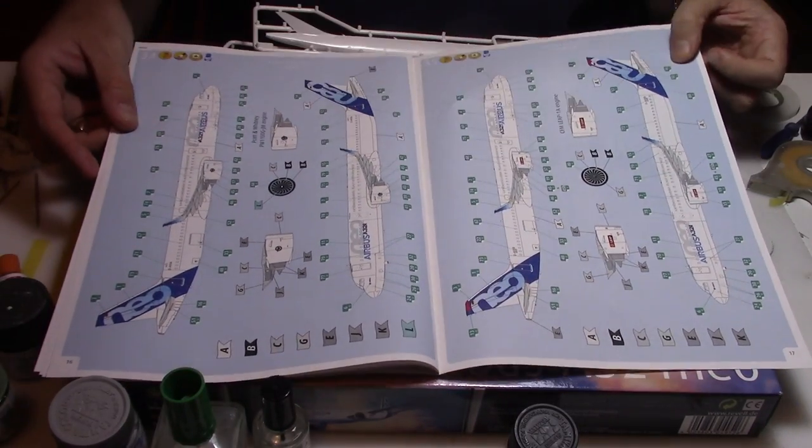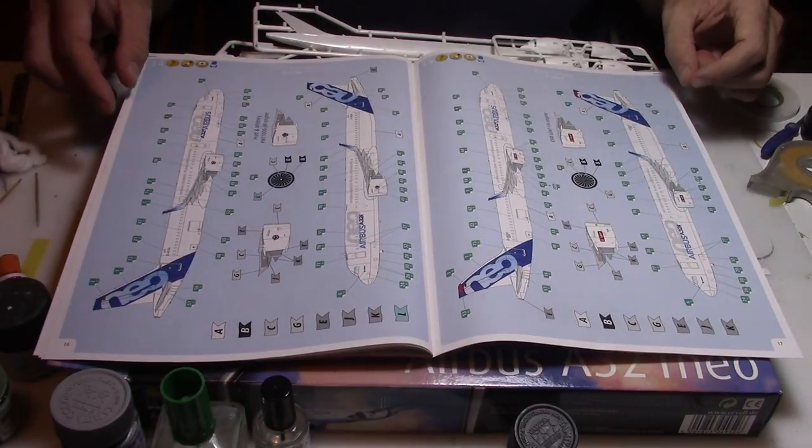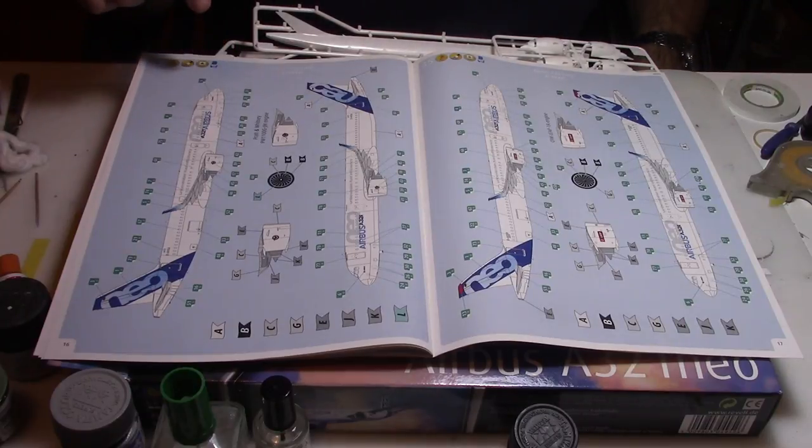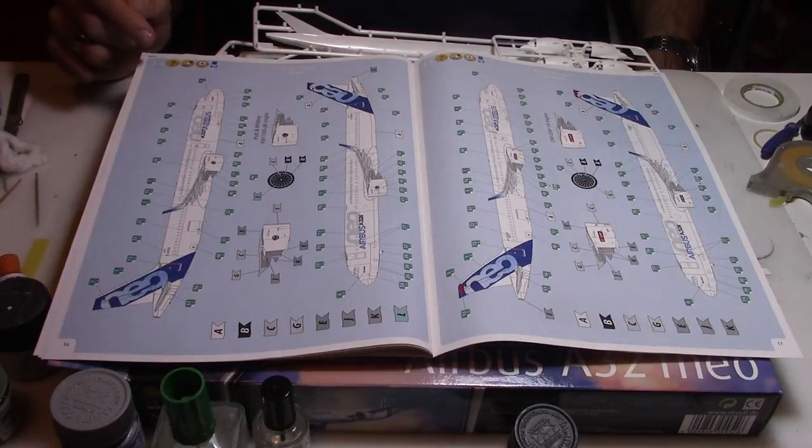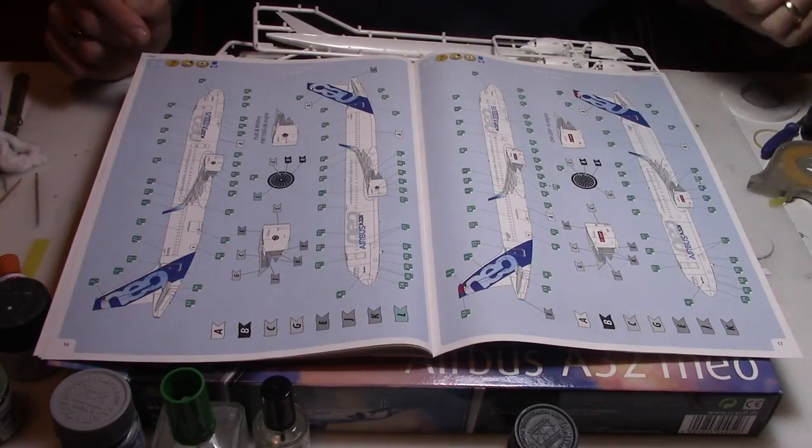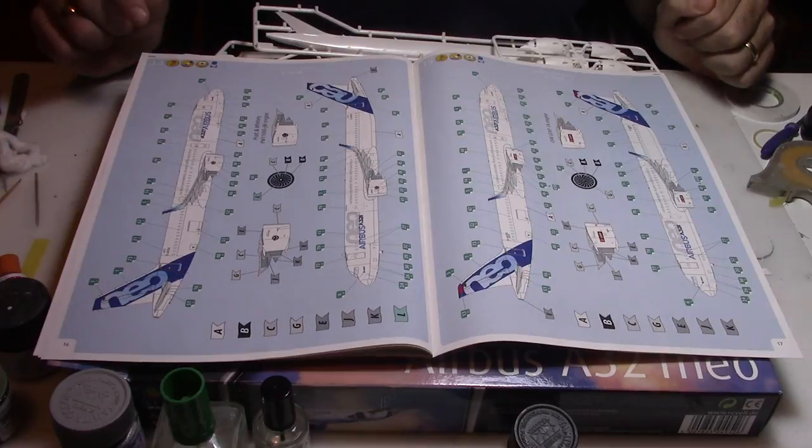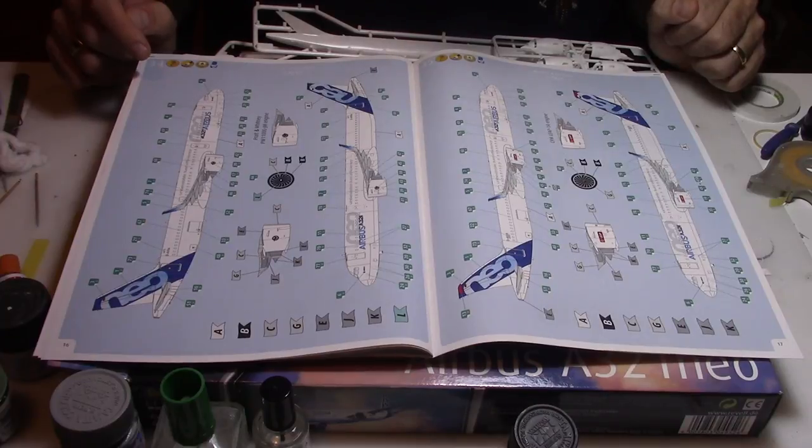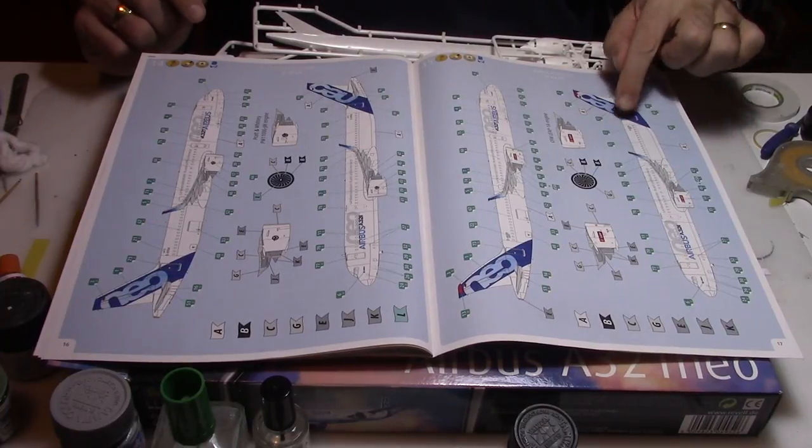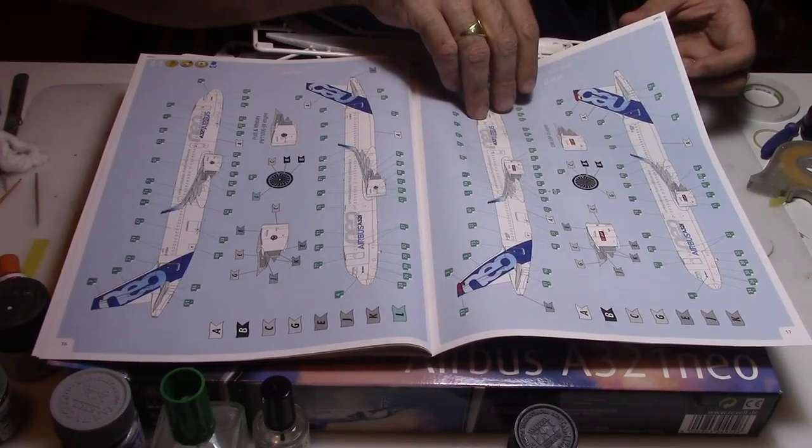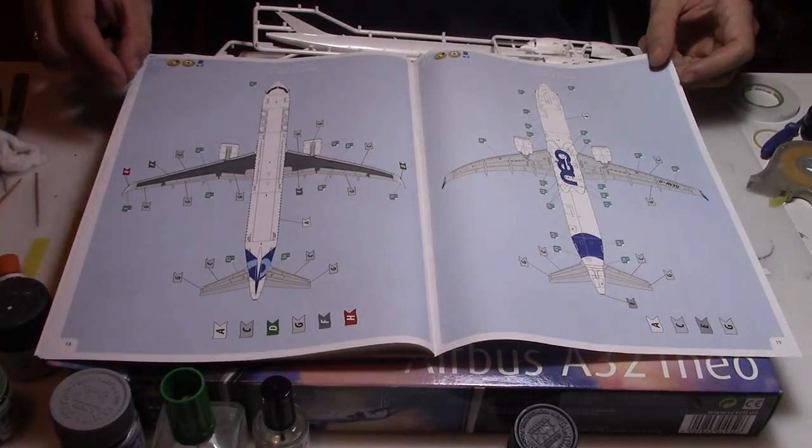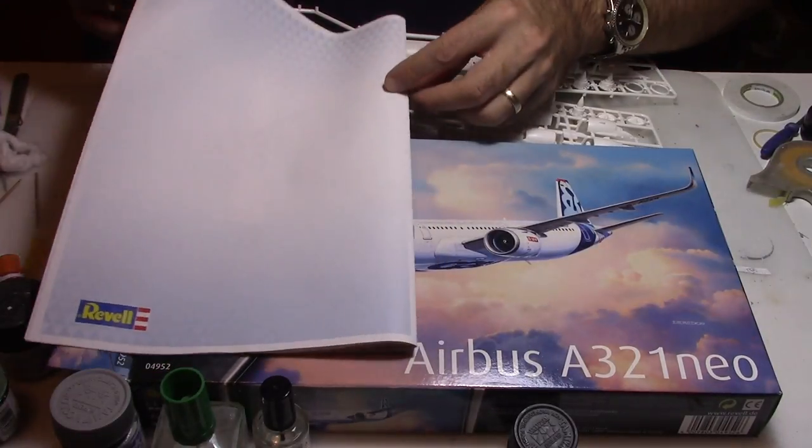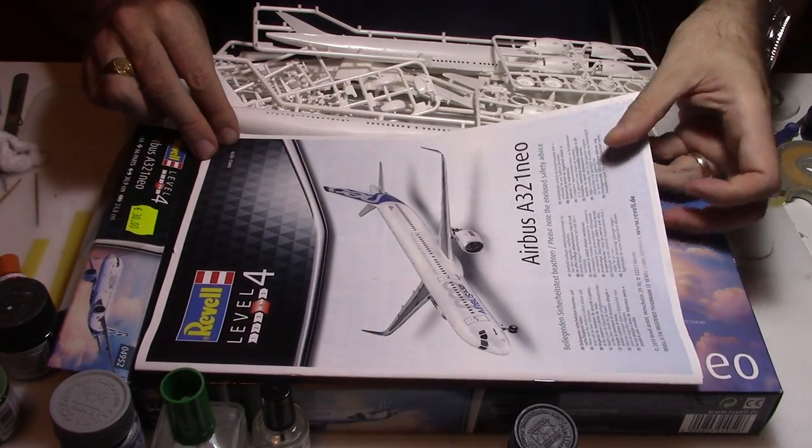Then we're coming down to the scheme. The decal sheet will have two types of engines: the Pratt & Whitney or the Leap engine. Both are from the factory, the 6673 and 6889 serial numbers. Those are the factory immatriculations, both are German. Top view and bottom view, and that's it basically for the instruction sheet. Quite a lot of things actually.